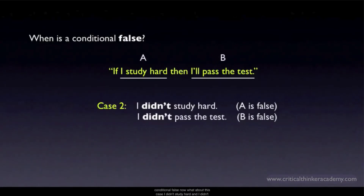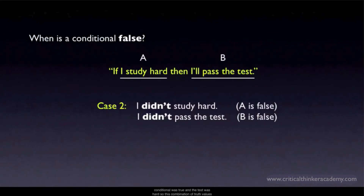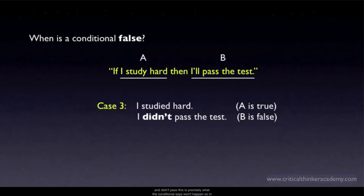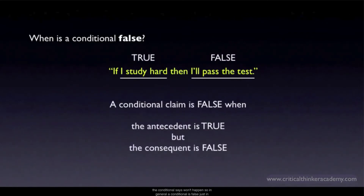What about the case where I didn't study hard and didn't pass the test? Here both the antecedent and the consequent are false. This clearly doesn't falsify the conditional — if anything, this is what you'd expect if the conditional was true and the test was hard. Now consider a third case: I studied hard, but I didn't pass the test. Here the antecedent is true but the consequent is false. Under these conditions, could the conditional still be true? No, it can't. These are the conditions under which a conditional is false. A conditional is false just in case the antecedent is true and the consequent is false — that's the only case where we say with certainty it's false. All other combinations of truth values are consistent with the conditional being true.